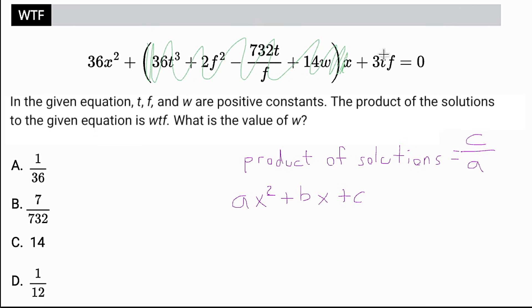C is going to be all of the constants over here. So I would have 3TF divided by A, which is the coefficient for X squared, 36 in this case.